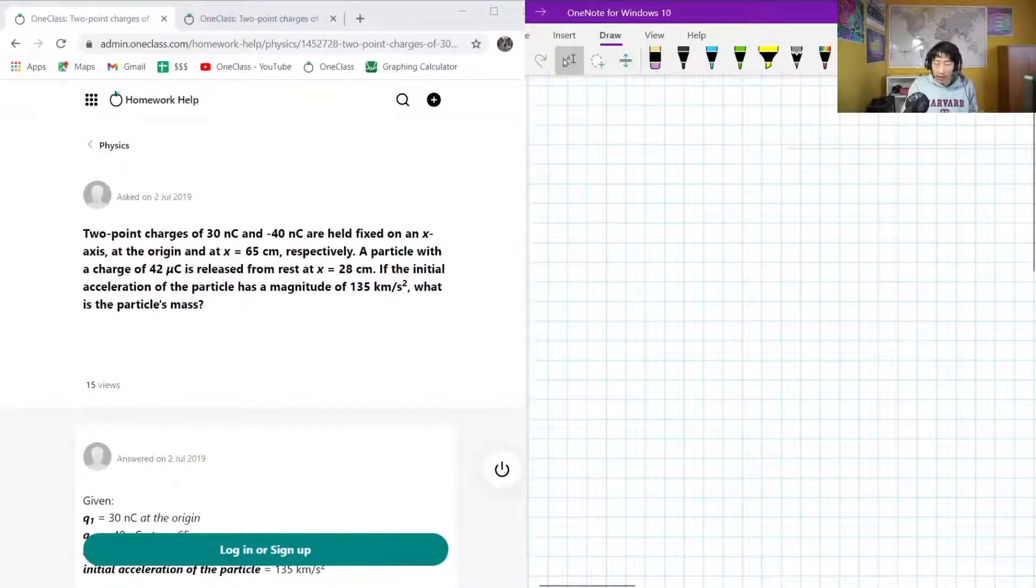Okay, so the next question that we have on the menu today is asking us, well, we have two point charges, one that's 30 nanocoulombs, one that's negative 40 nanocoulombs, and they are both held on the x-axis, with the 30 being at the origin and the negative 40 being at 65 centimeters along.